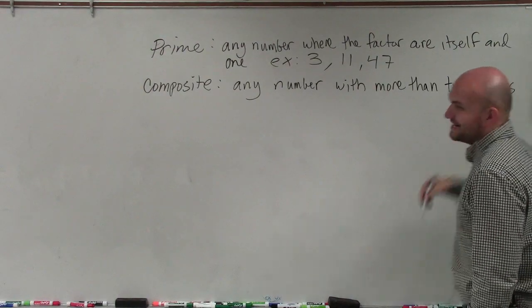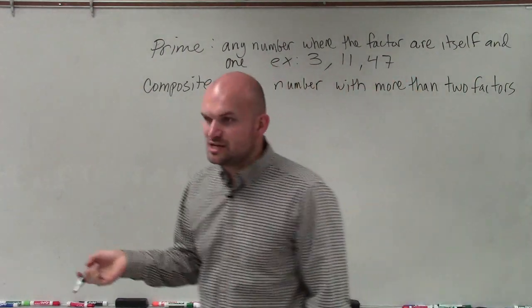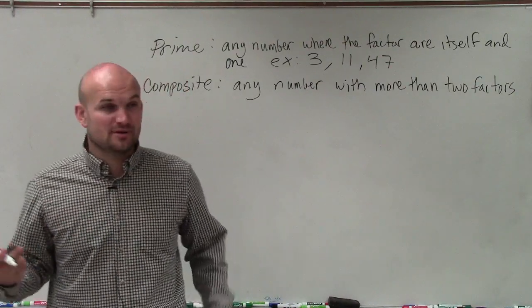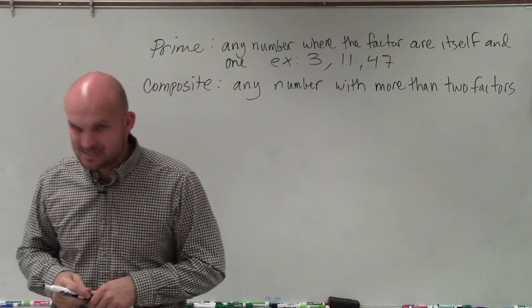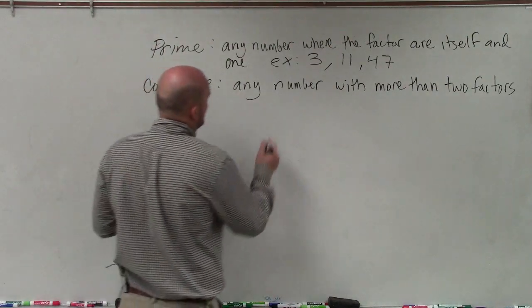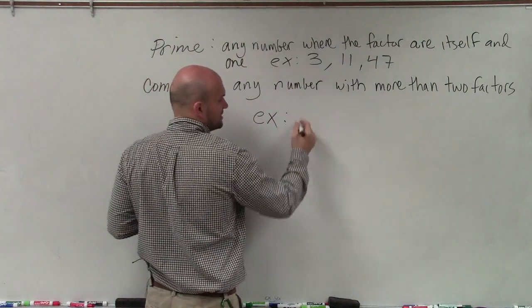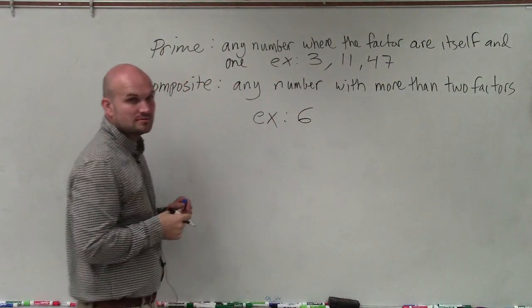Because we know that any number is always going to be divisible by one and itself. So if it has any other number that can divide into it, then we call it a composite number. An example of a composite number would be the number six that I wrote.